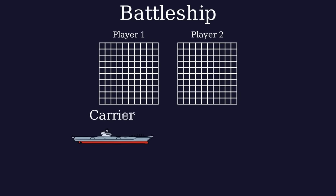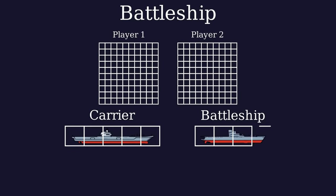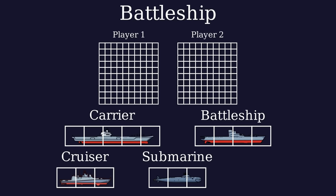The carrier, which is 5 squares long. The battleship, which is 4 squares long. The cruiser and submarine, both of which are 3 squares long. And the destroyer, which is just 2 squares long.